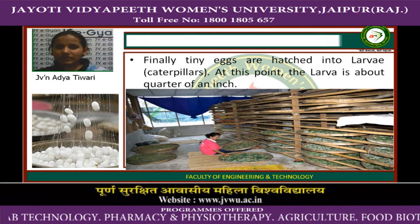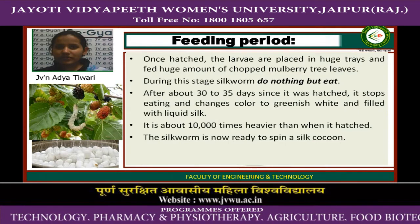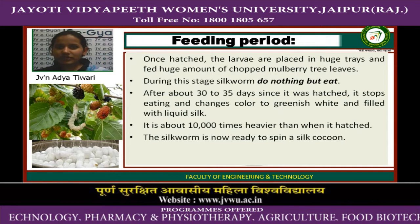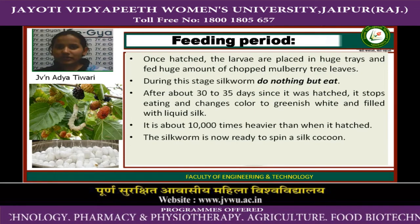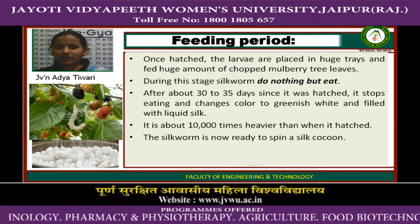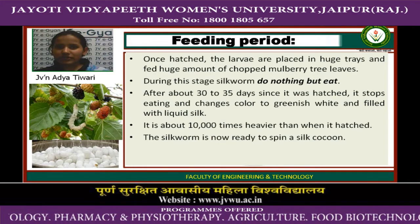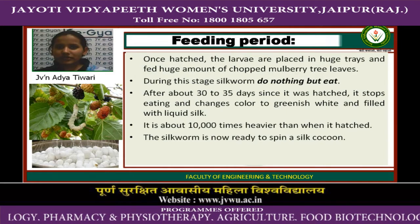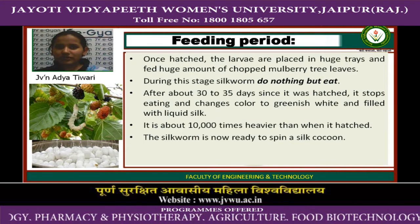Finally, tiny eggs are hatched into larva caterpillars, at which point the larva is about a quarter of an inch. Once hatched, the larvae are placed in huge trays and fed huge amounts of chopped mulberry leaves. During this stage, silk moths do nothing but eat. After about 30 to 35 days since hatching, they stop eating, change color to greenish white, fill with liquid silk, and become about 10,000 times heavier than when hatched. The silk moth is now ready to spin a cocoon.